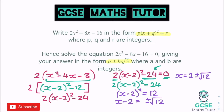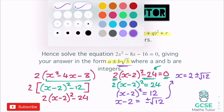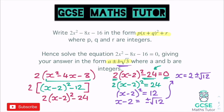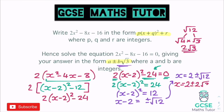We do need to have a look at writing it in the form it wants - it wants it as b root 3. So we need to think about root 12 and how that simplifies. Root 12: the square number that goes into that is 4. So we can write that as the square root of 4 times by the square root of 3. The square root of 4 is 2, so that's 2 root 3. Finishing this off, we can write it in the form it's asking for: x equals 2 plus and minus 2 root 3. And there is our final answer, writing it in that form that the question asks for.